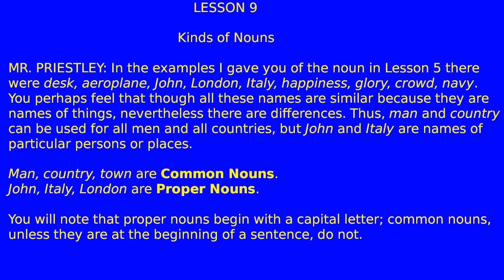Lesson 9: Kinds of Nouns. Mr. Priestly, in the examples I gave you of the noun in lesson 5, there were: desk, airplane, John, London, Italy, happiness, glory, crowd, Navy. You perhaps feel that these names are similar because they are names of things.